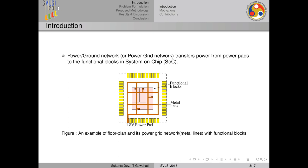Due to the length of the metal lines, some voltage drop occurs and the blocks do not get the exact power they are designed for. Here the VDD voltage is 1.8V, but the blocks are getting something less than this. If this voltage becomes less than a certain level, those blocks may malfunction. So the analysis and optimization of this power grid is very important.